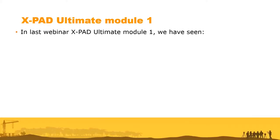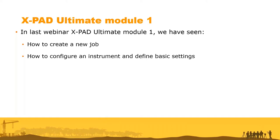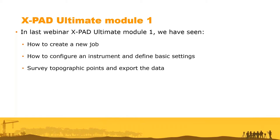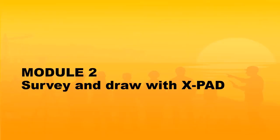To continue the recap of module one: we saw how to create a new job, configure an instrument, and define the basic settings — always the first steps when starting with xPad. We configured a GPS, total station, or robotic total station, created a new job, and then very quickly surveyed some points, exported data, and performed a stakeout. Today we focus more on the drawing.